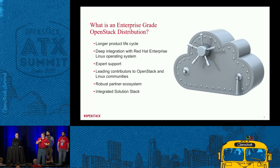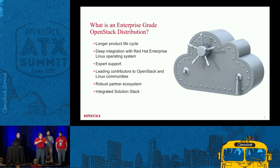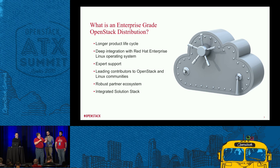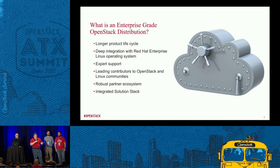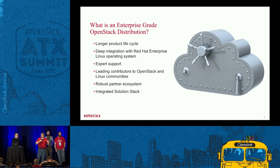At the same time, there's a deep integration with Red Hat Enterprise Linux. That co-engineering between OpenStack processes and the Linux kernel is critical to OpenStack functionality. Red Hat has been one of the leading contributors to both OpenStack and Linux communities for years, as well as Rackspace. And that fills in our expert support. In addition, we have a robust partner ecosystem — hardware, software, ISVs, systems integrators, just across the board. And it really allows Red Hat to produce a very integrated solution stack that's certified, hardened, and proven to work.